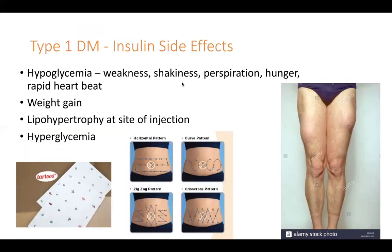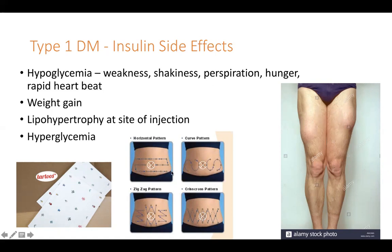Side effects include hypoglycemia — generally if you give yourself too much insulin or give insulin without eating a meal — weight gain, since insulin is an anabolic hormone, and lipohypertrophy at the injection site. Lipohypertrophy is a lump under the skin caused by increased fat cell production from insulin's anabolic effect. It can change how insulin is dispersed, is unsightly, and slightly painful. To avoid this, you rotate injection sites using different patterns, or use temporary tattoos on the belly to track used sites.